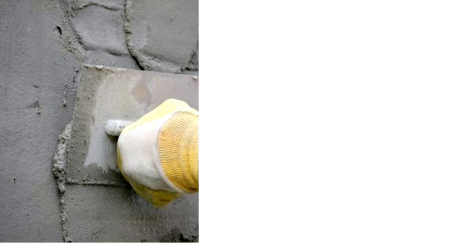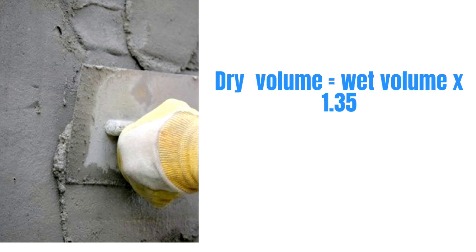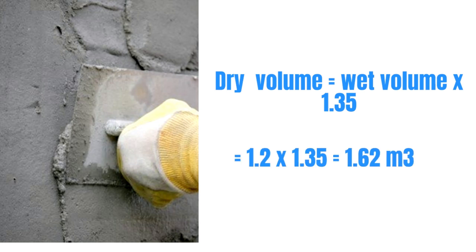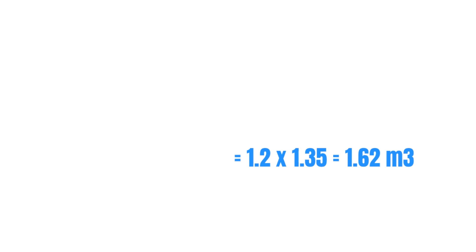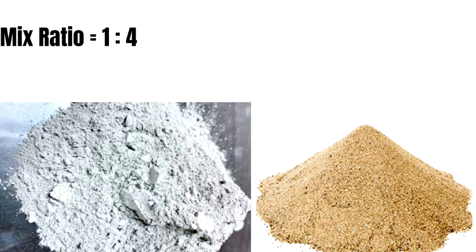For us to get the quantity of cement and sand, we need to get the dry volume. The dry volume will be the wet volume multiplied by a factor of 1.35 — that is 1.2 multiplied by 1.35 — which equals 1.62 cubic meters. The mix ratio for the mortar is 1:4, giving us a total ratio of 5.